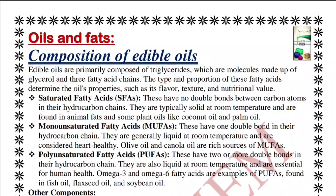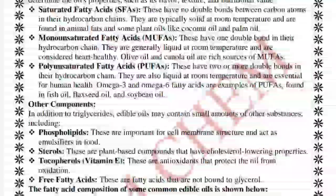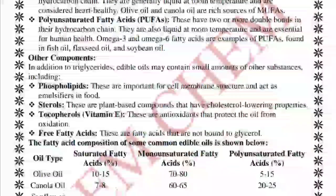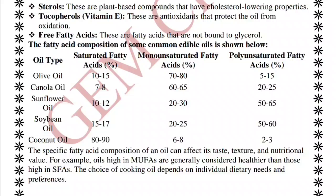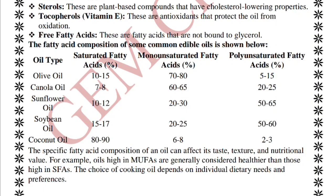For oils and fats, the syllabus requires us to know the composition of edible oils. Edible oils consist of saturated fatty acids (no double bonds), monounsaturated fatty acids (one double bond), and polyunsaturated fatty acids (two or more double bonds). Other components include phospholipids, sterols, tocopherols, and free fatty acids. Different oil types have varying proportions of these fatty acids.